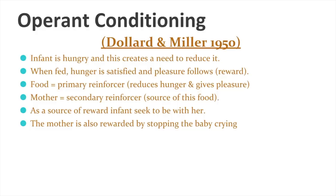Then operant conditioning also has a role to play. Operant conditioning suggests learning through reward and punishment — specifically positive and negative reinforcement. For the infant, they are positively reinforced by being with the mother: they get a reward, which is the food. So food is the primary reinforcer and the mother becomes the secondary reinforcer. But also, importantly, the mother gets a reward as well — something she wants taken away is taken away, which is a negative reinforcer. So this could explain why we get attachments.